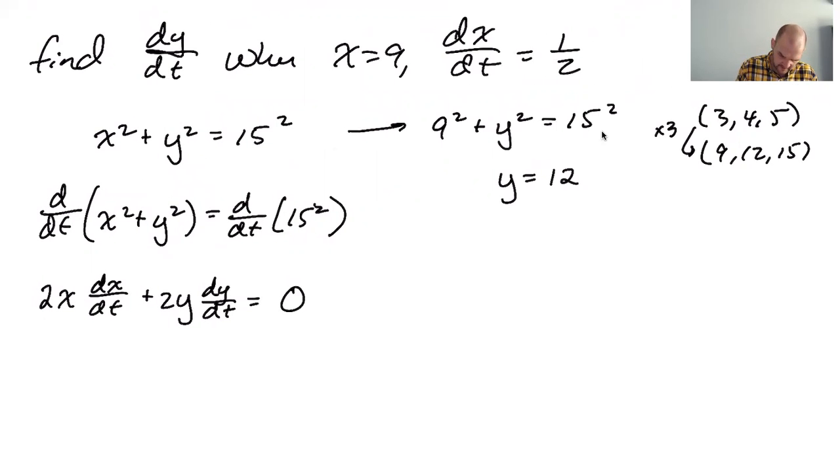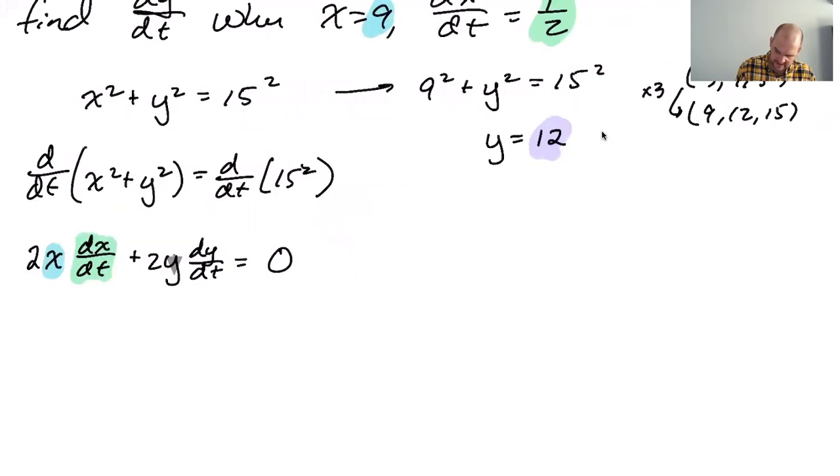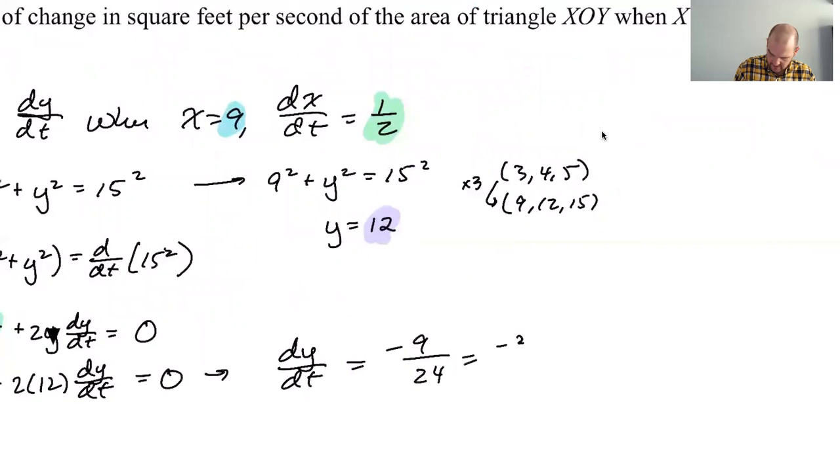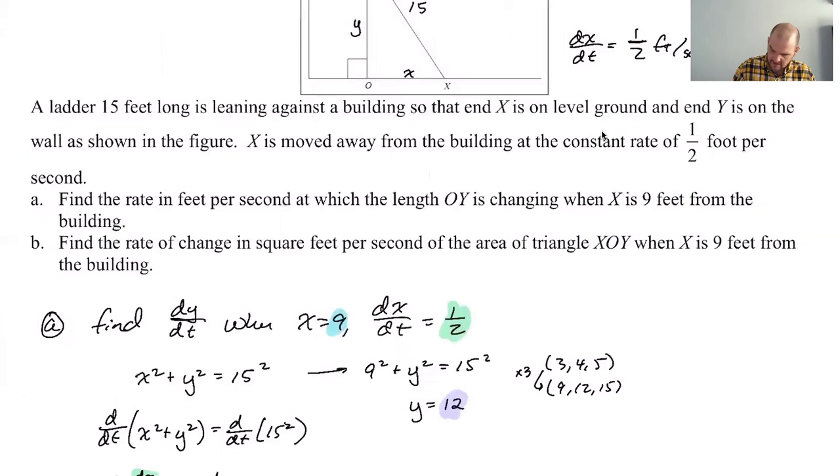What are we doing? So we know X is going to be 9. We know dx/dt is going to be 1/2. We know that Y is going to be 12. And we'll solve for dy/dt. 2 times 9 times 1/2 is just 9 plus 2 times 12 dy/dt equals 0. So I think dy/dt is going to be negative 9 over 24, which you can simplify into negative 3/8, but you also do not need to. I think that's feet per second. Yeah.